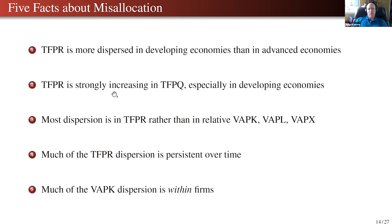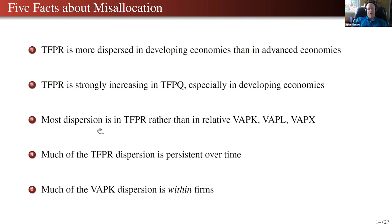Interestingly, this relationship is stronger in developing economies, which is interesting from the point of view of there being different incentives for investing in TFPQ and productivity. Another fact is that most of the dispersion — when you put wedges on all inputs: capital, labor, intermediates — is in a common component. Some firms have high values of average products of capital, labor, and materials, and others have low ones. That common component accounts for more of the dispersion in TFPR than any one component standing out.